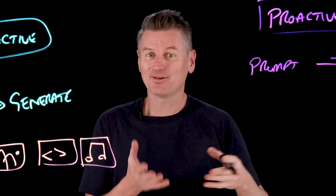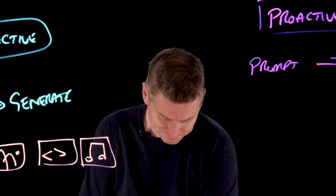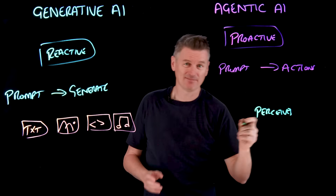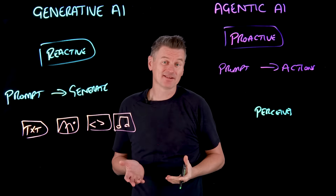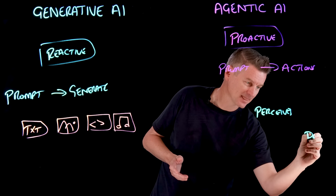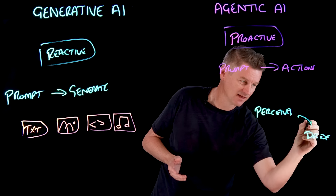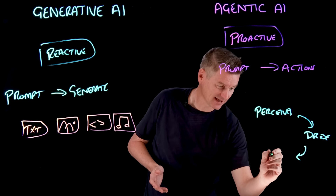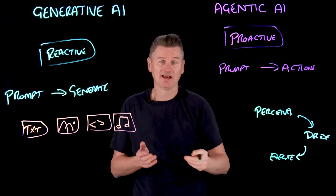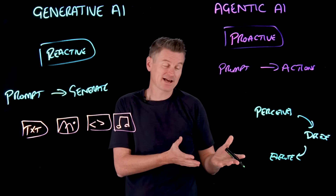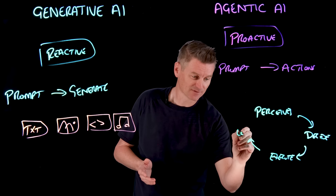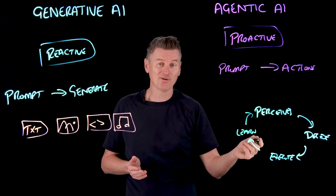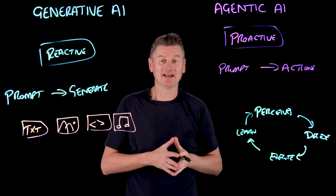An agentic system goes through a lifecycle. First, it perceives its environment. Then it decides an action to take. Once it's decided, it executes that action. Once executed, it learns from the output. Then the cycle repeats — round and round — all with minimal human intervention.